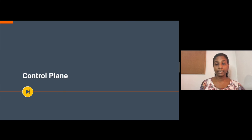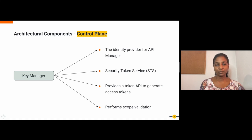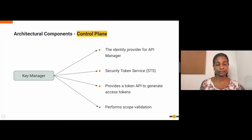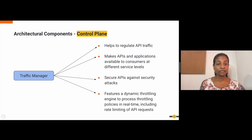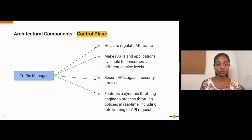The control plane is where the API security validation, API key generation and rate limiting decisions are taken. The key manager component is the identity provider for WSO2 API Manager and acts as the secure token service. In WSO2 API Manager, tokens are generated for an application. The key manager provides a token API to generate access tokens, which can be used by clients to invoke APIs exposed by WSO2 API Manager. The key manager performs scope validation as well. The traffic manager component helps users to regulate API traffic, make APIs and applications available to consumers at different service levels, and secure APIs against security attacks. The traffic manager features a dynamic throttling engine to process throttling policies in real time, including rate limiting of API requests.